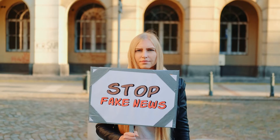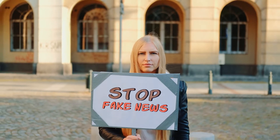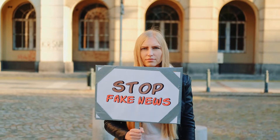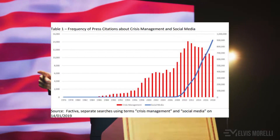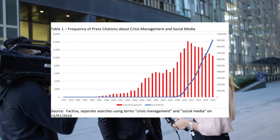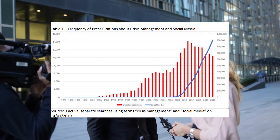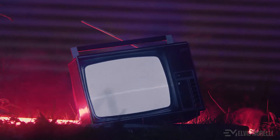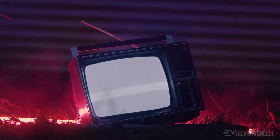Several factors have been implicated in the spread of fake news, such as political polarization, post-truth politics, motivated reasoning, confirmation bias, and social media algorithms. Fake news can reduce the impact of real news by competing with it.